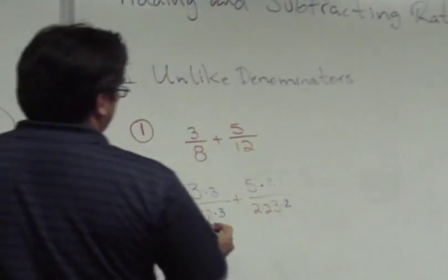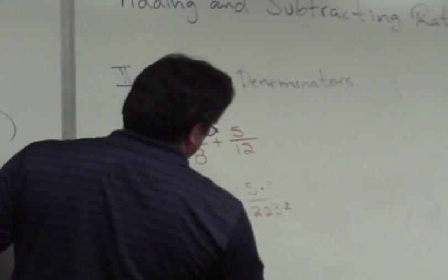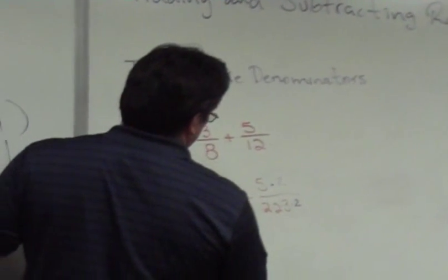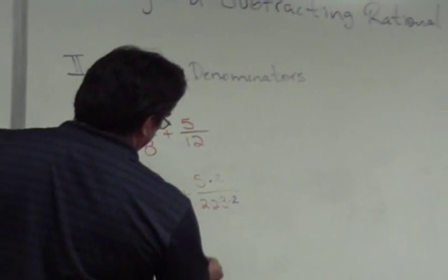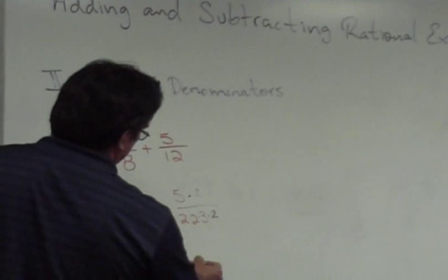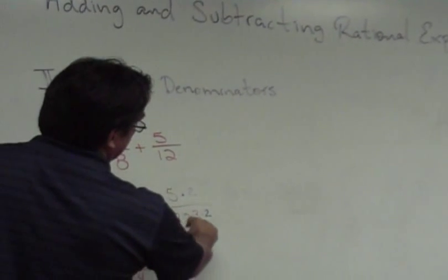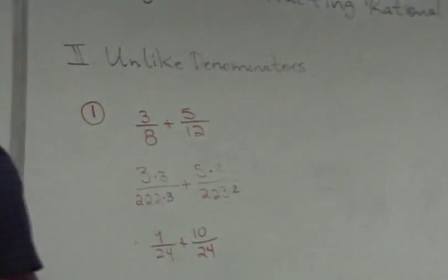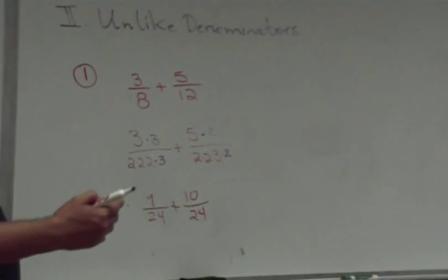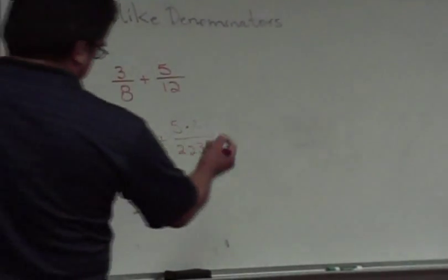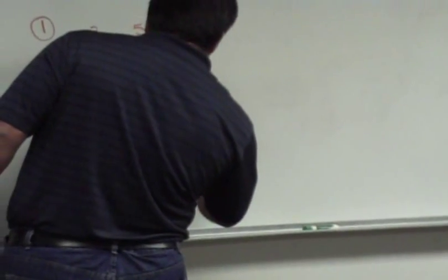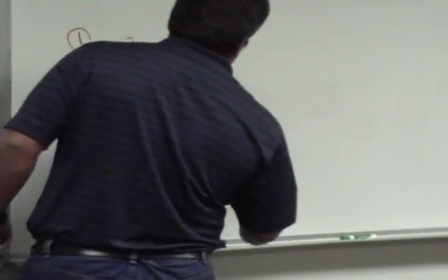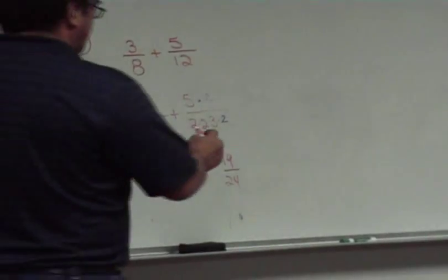Once you have that, multiply your numerators. 3 times 3 is 9. The denominator: 2 times 2 times 2 times 3 is 24. Plus 5 times 2 is 10, over 2 times 2 times 3 times 2 which is also 24. As expected, they're identical. Now we have fractions with the same denominator — we're back to the original type of problem. This gives us 19 over 24. Can we simplify 19 and 24? No, there are no common factors. We're done.